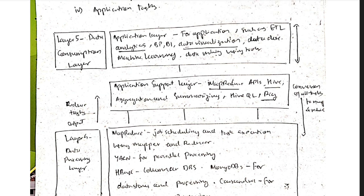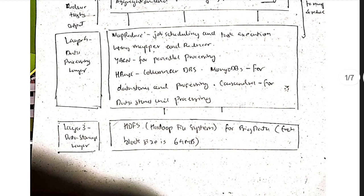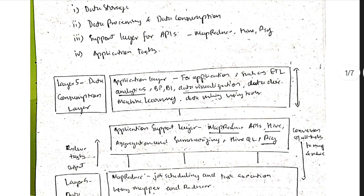Inside each layer: the application layer has data visualization, analytics, machine learning, and applications. The application support layer has MapReduce APIs, Hive, Pig, HQL, aggregation, and summarizing. The data processing layer has MapReduce and YARN. The data storage layer stores data in HDFS (Hadoop File System) with a default block size of 64 MB.